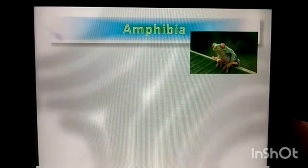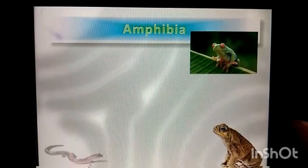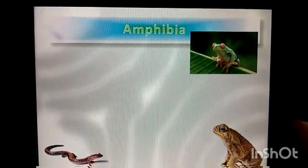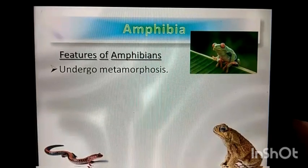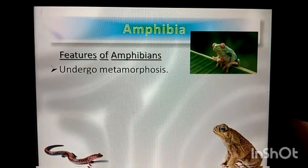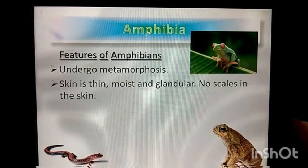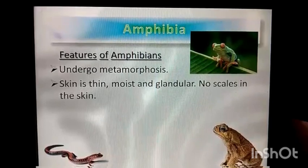The next vertebrate group is Amphibia. Frogs, toads, and salamander are some of the examples of Amphibia. Features of Amphibians: they undergo metamorphosis. Skin is thin, moist, and granular.